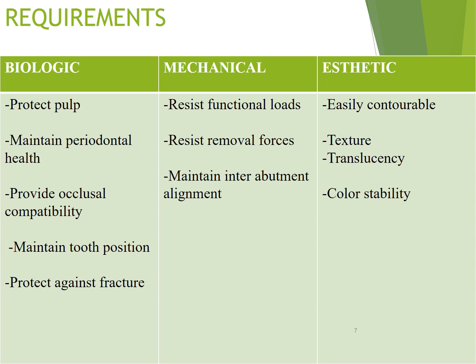There are three main requirements for provisional restorations: biological, mechanical, and aesthetic. Biological requirements include protecting the pulp, maintaining periodontal health, occlusal compatibility, maintaining tooth position, and protecting against fractures. Mechanical requirements are resisting removal forces, resisting functional loads, and maintaining inter-abutment alignment. Aesthetic requirements include being easily contourable, having proper texture, translucency, and color stability.